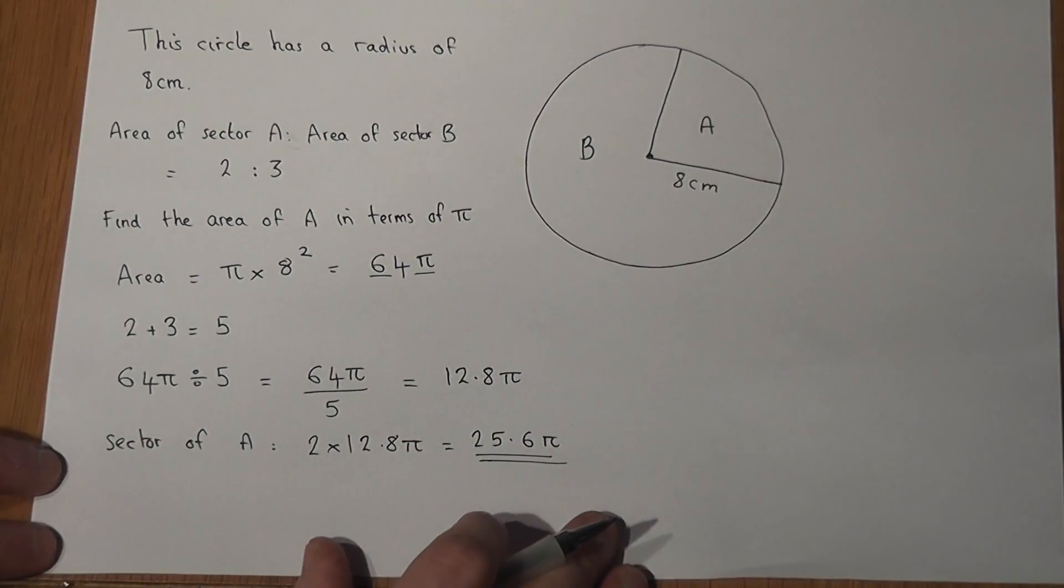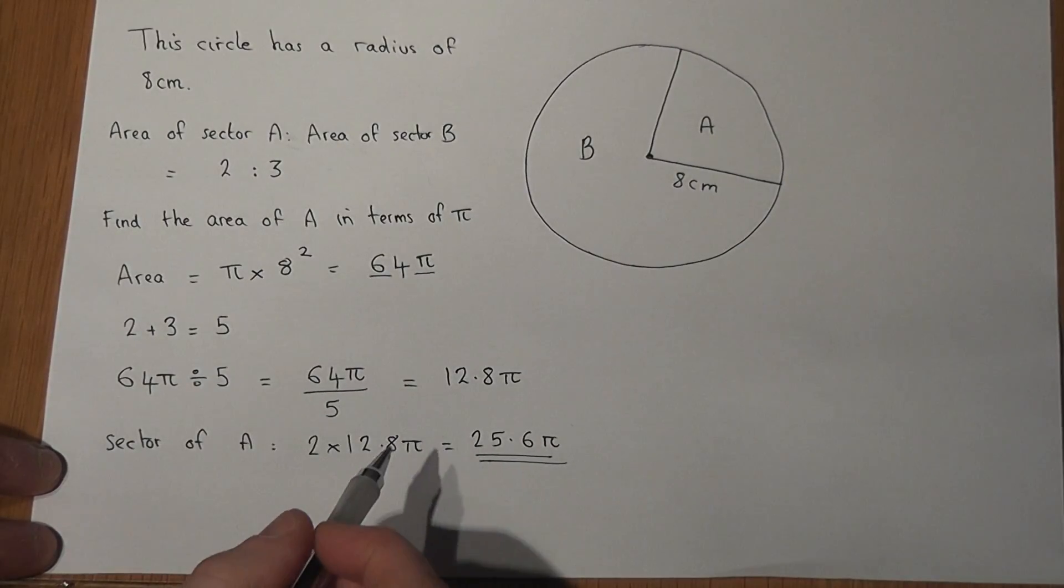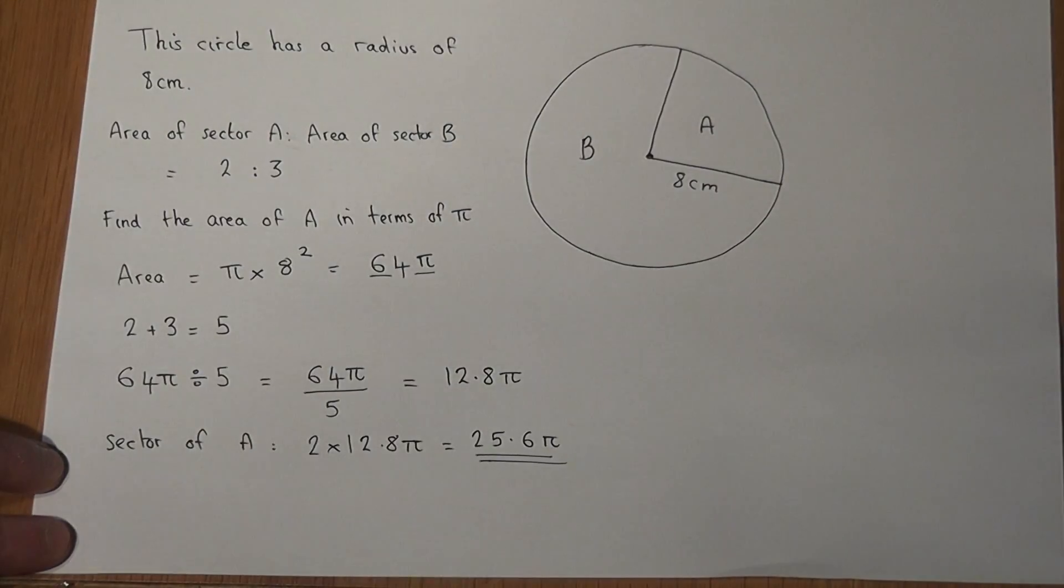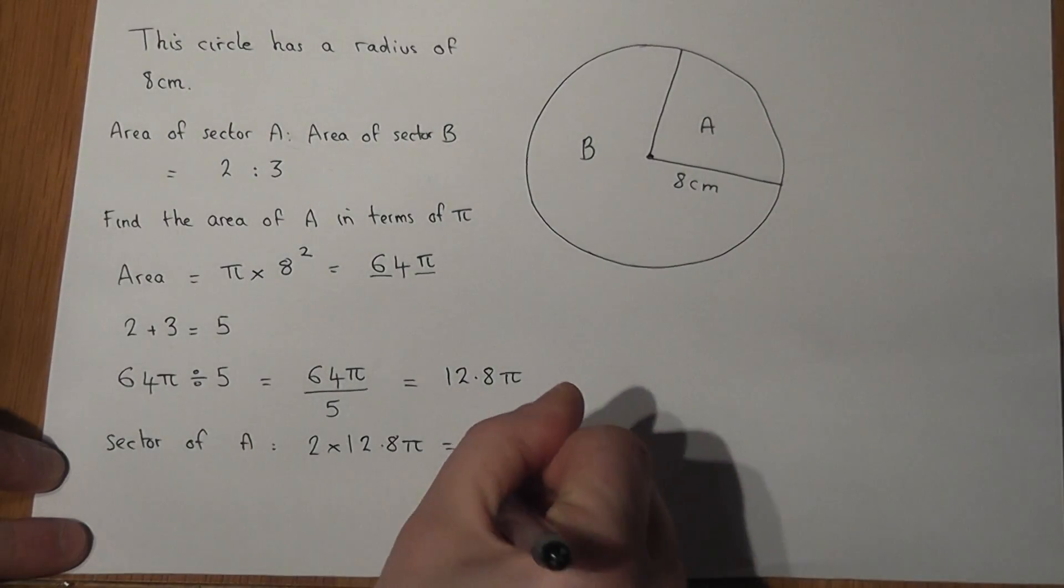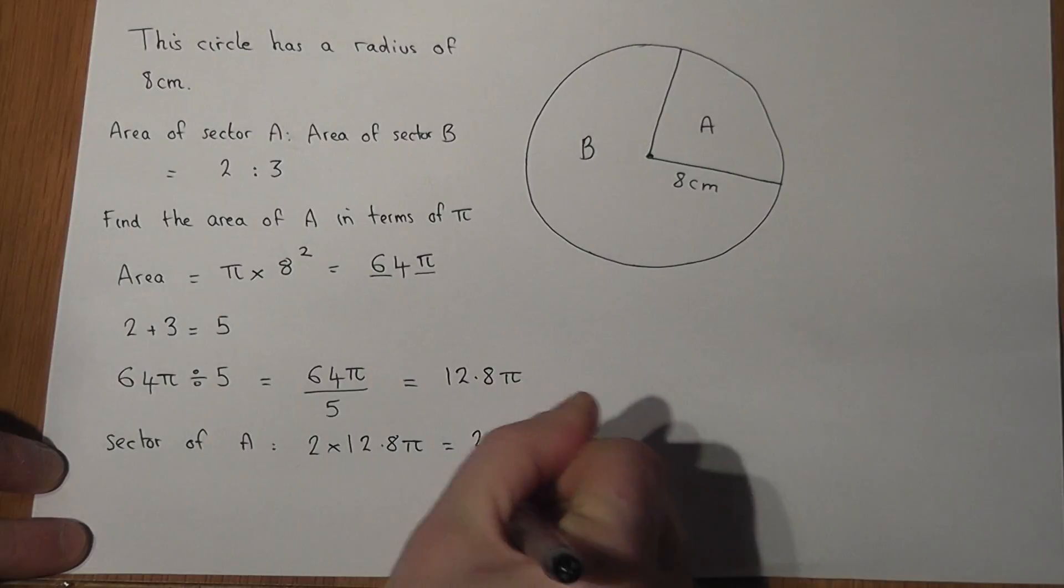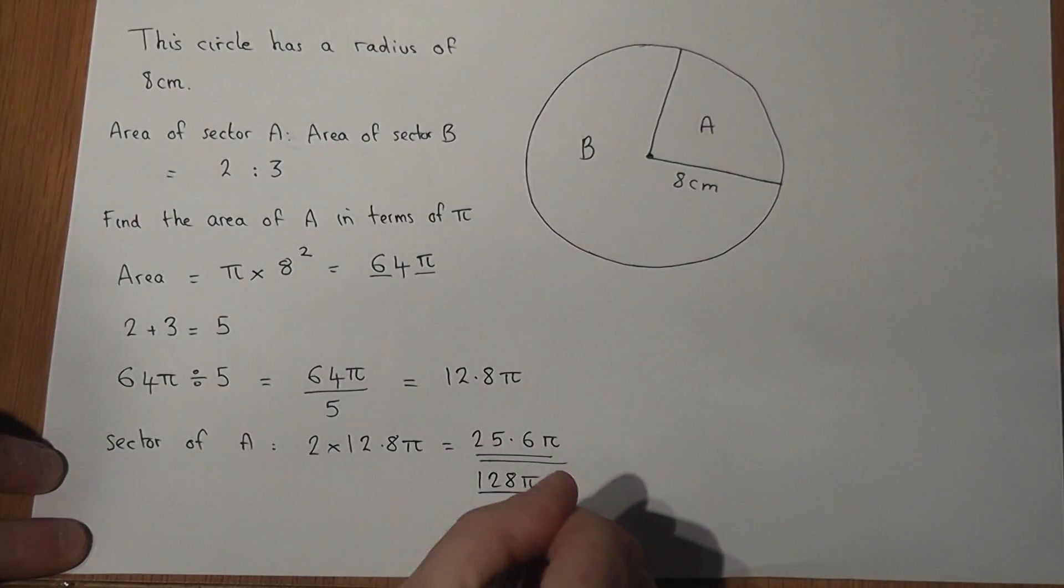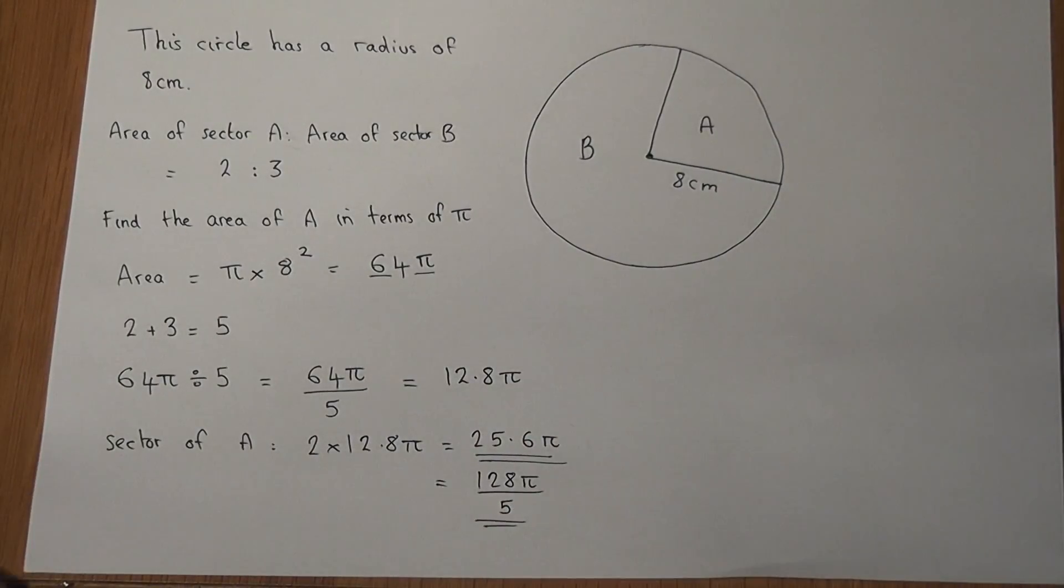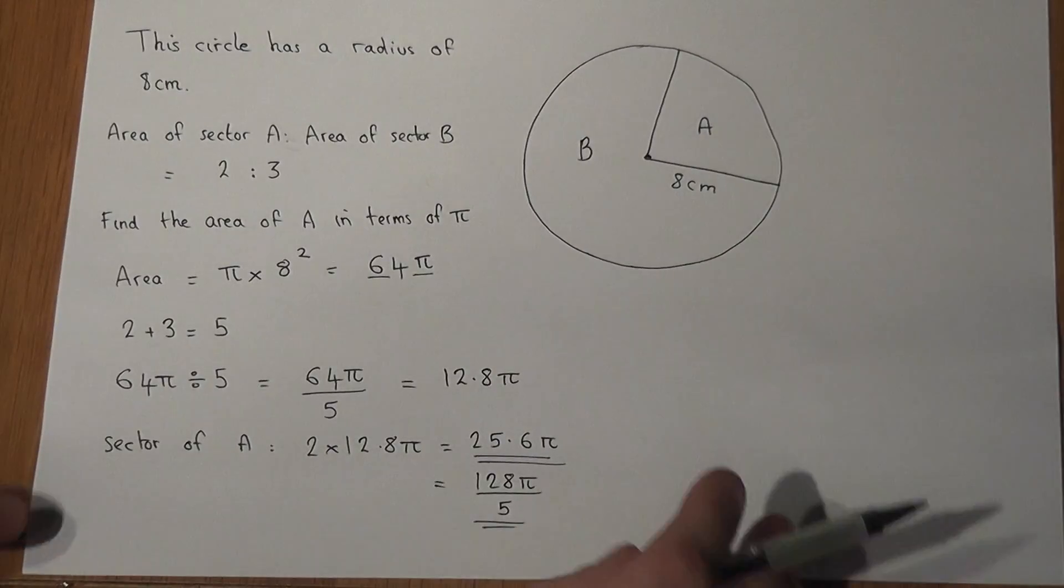The other option rather than using decimals is to times the fraction by 2. If I times the fraction by 2, 2 lots of 64 is 128. So 128π over 5 is also an equivalent expression for the area of sector A.